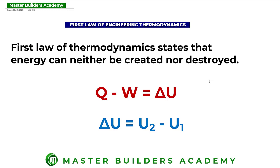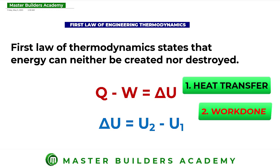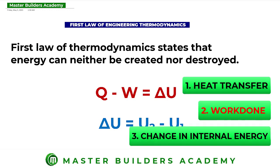Now for calculations under the first law of thermodynamics, in any thermodynamic system there are three things that exist: number one is heat, number two is work done, and number three is the change in internal energy.